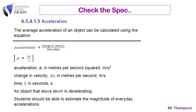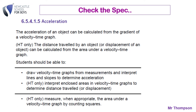Just checking the spec — what you exactly need to know. You need to know the average acceleration of an object can be calculated from the equation: acceleration is change in velocity over time taken. A equals delta V over T, where acceleration is measured in meters per second squared, delta V in meters per second, and time in seconds. You need to know an object that slows down is decelerating, and you should be able to estimate the magnitude of everyday accelerations. Also, acceleration can be calculated from the gradient of a velocity-time graph, and at a higher level, you'll be able to work out the distance travelled from the area under one of these graphs.